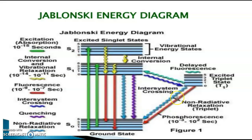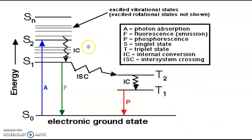Both in fluorescence and phosphorescence there will be non-radiative relaxations. The final red arrow gives the phosphorescence, which takes 10⁻³ to 10² seconds — nothing but delayed fluorescence. The same Jablonski diagram can also be explained as follows: A is photon absorption, F is fluorescence, I is internal conversion, ISC is inter-system crossing, IC is internal conversion in phosphorescence, T1 and T2 are triplet states, and P is phosphorescence.